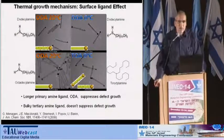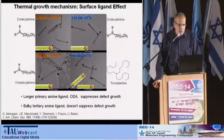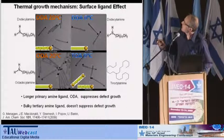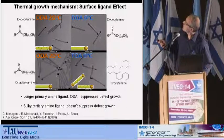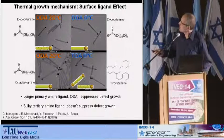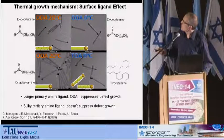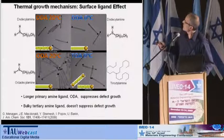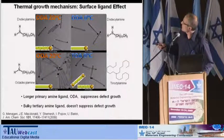To further understand the mechanism, we looked at the effect of surface ligands on the growth. The original reaction used dodecylamine, which at 0°C suppresses defect growth. If you go to a longer amine, octadecylamine, even at room temperature defect growth is suppressed. On the other hand, with a bulky tertiary amine, trioctylamine, we see defect growth even at low temperature, and in some cases two-sided growth.